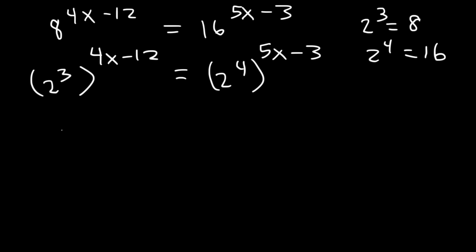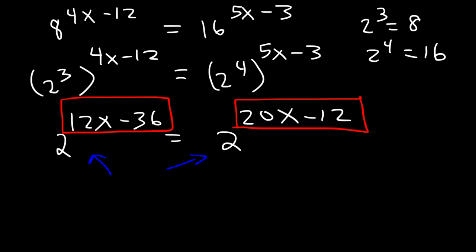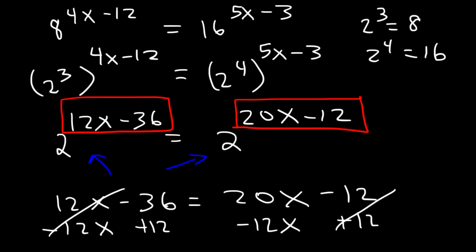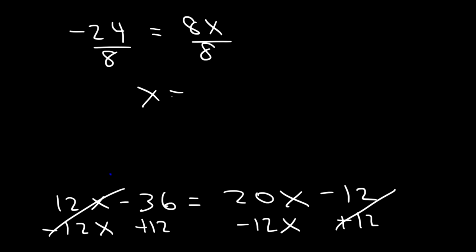We need to multiply 4x minus 12 by 3: that gives 12x minus 36. And we multiply 5x minus 3 by 4, giving 20x minus 12. Now that we have the same base, we set the exponents equal: 12x minus 36 equals 20x minus 12. Subtracting 12x and adding 12 to both sides gives negative 24 equals 8x. Therefore x is equal to negative 3.